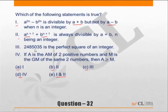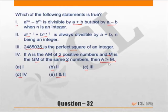Statement 3 — 4835 of 35 being a perfect square — can be checked but may take time. Statement 4: if A is the arithmetic mean and M is the geometric mean of two positive numbers, then AM is greater than or equal to GM. That is always true, so statement 4 must be part of the answer. Any choice not containing statement 4 is incorrect, so choice D is the correct answer.